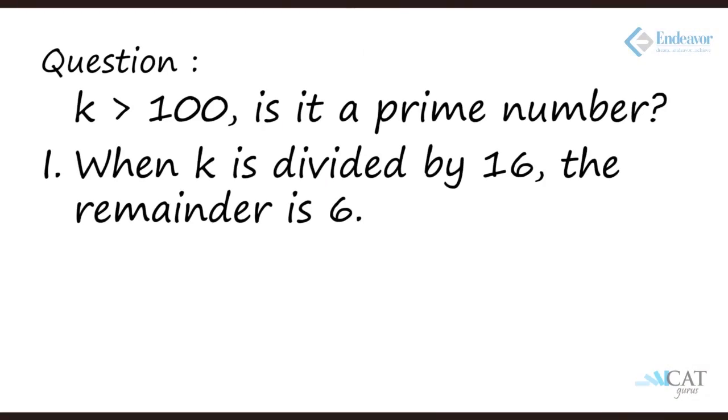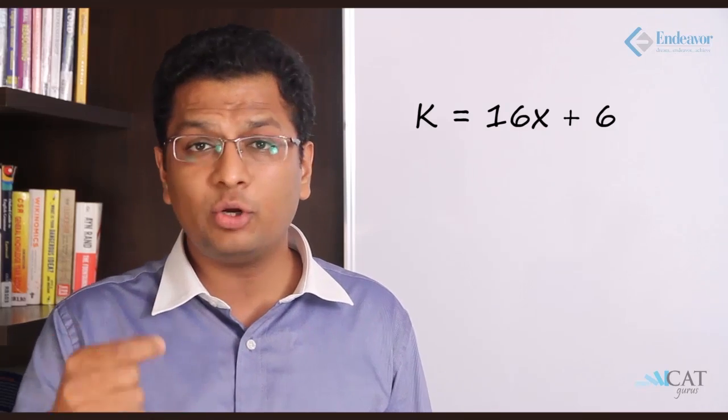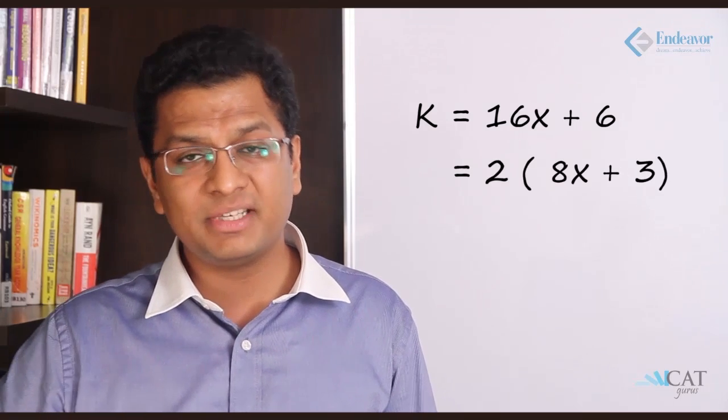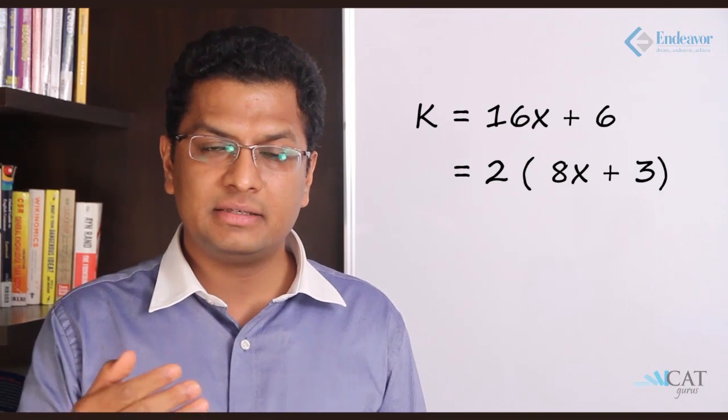The first statement: when k is divided by 16, the remainder is 6. So can I write k as 16x plus 6, which can also be written as 2 times (8x plus 3). Now k is a multiple of 2 here, hence it is not a prime number. From the first statement I can conclude that k is not a prime number.